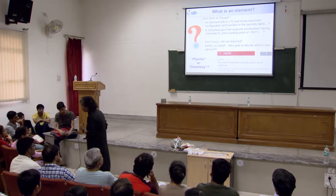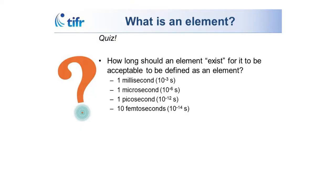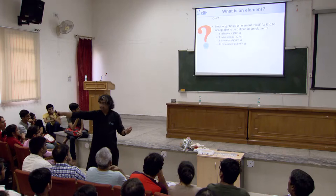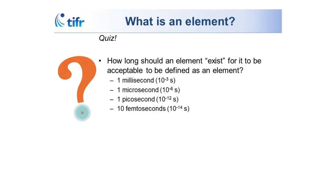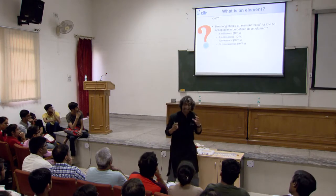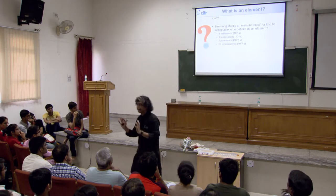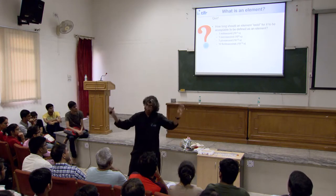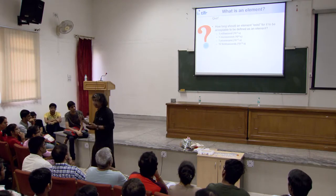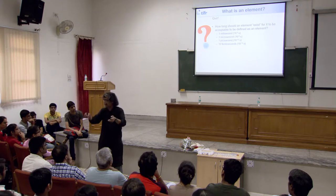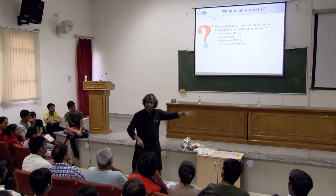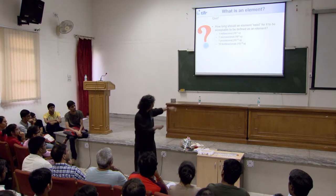A remarkable quiz question: how long should an element exist before we can call it an element? Is it a microsecond, a millisecond, a picosecond, or 10 femtoseconds? The answer is actually 10 femtoseconds, because they say that 10 femtoseconds is the time a nucleus needs to capture electrons to form an atom. Physicists are happy measuring one atom, done — element discovered. But chemists say with 10 femtoseconds or even microseconds you can't do regular chemistry. The rules right now say 10 femtoseconds.